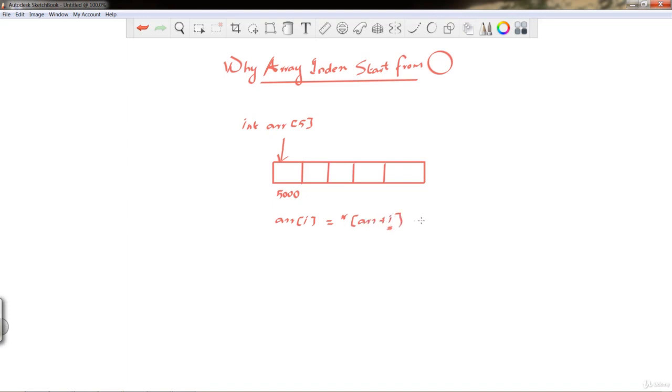If i equals 0, that means we want to access the first element. Then array of i equals reference of 5000 plus 0, which is 5000. So it will give this location value. As we discussed, we can access the array by using index, like array of index.